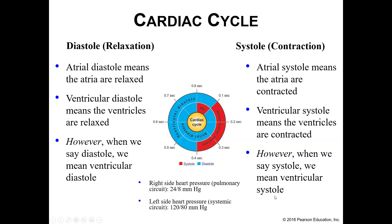Unless we are super specific and say atrial diastole, if we just say the word diastole we're talking about ventricular diastole. Same thing with systole — if we're not specific and just throw around the word systole, we're talking about ventricular systole. All the good stuff happens in the ventricles.